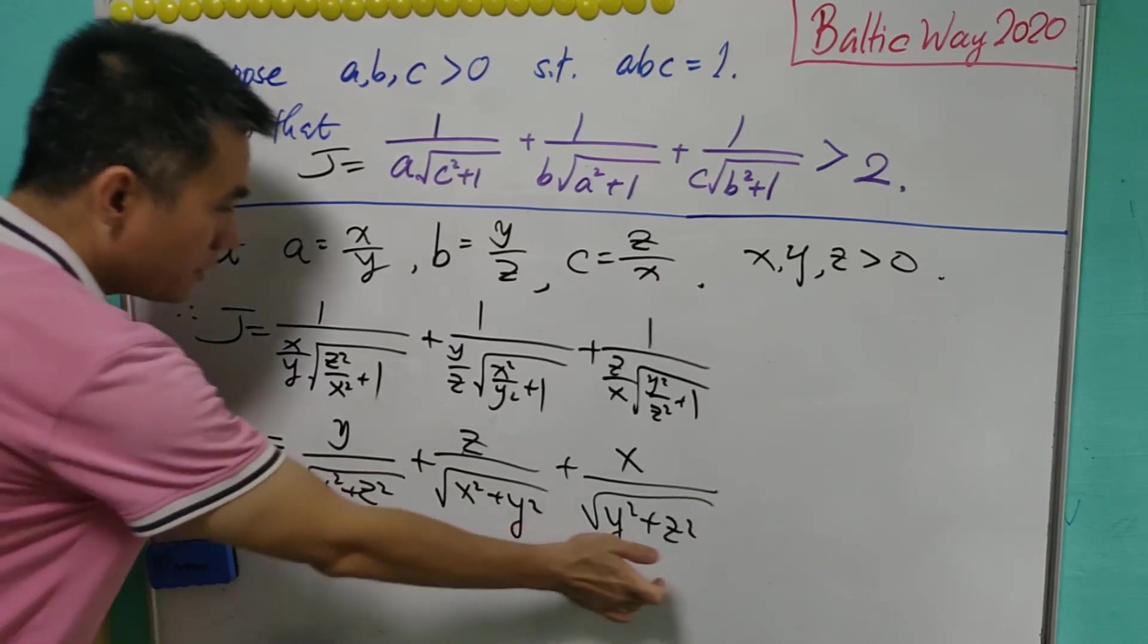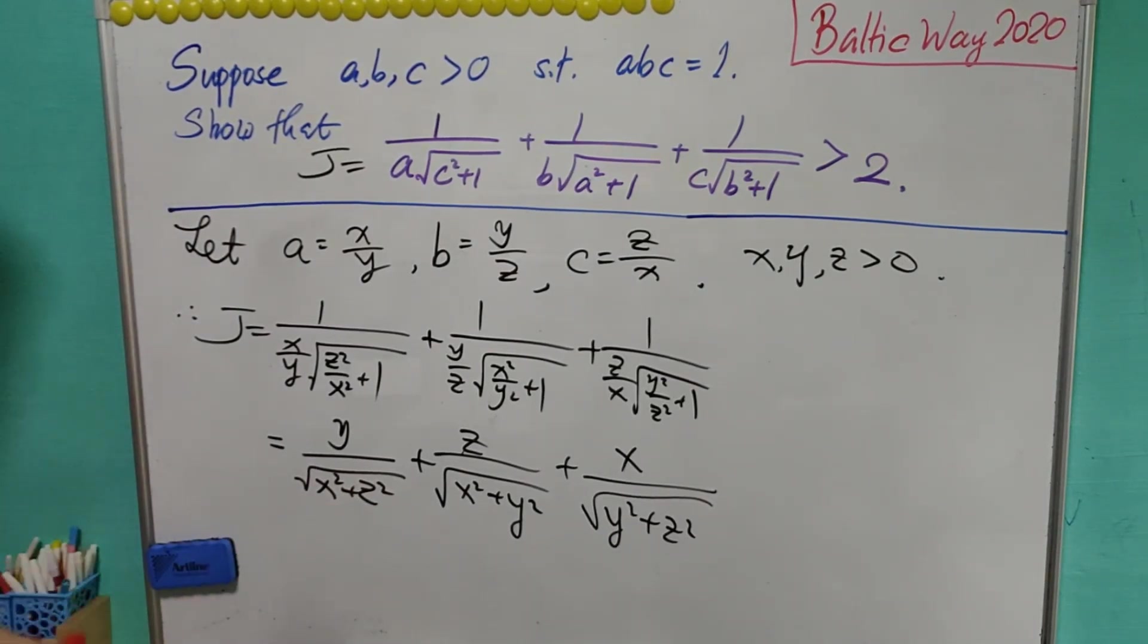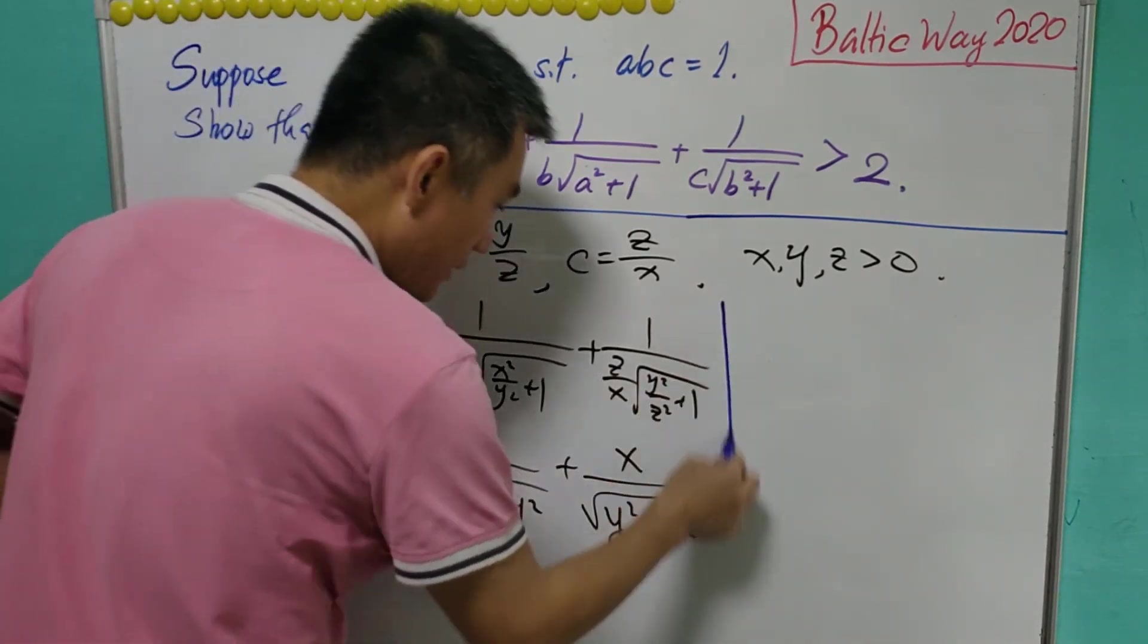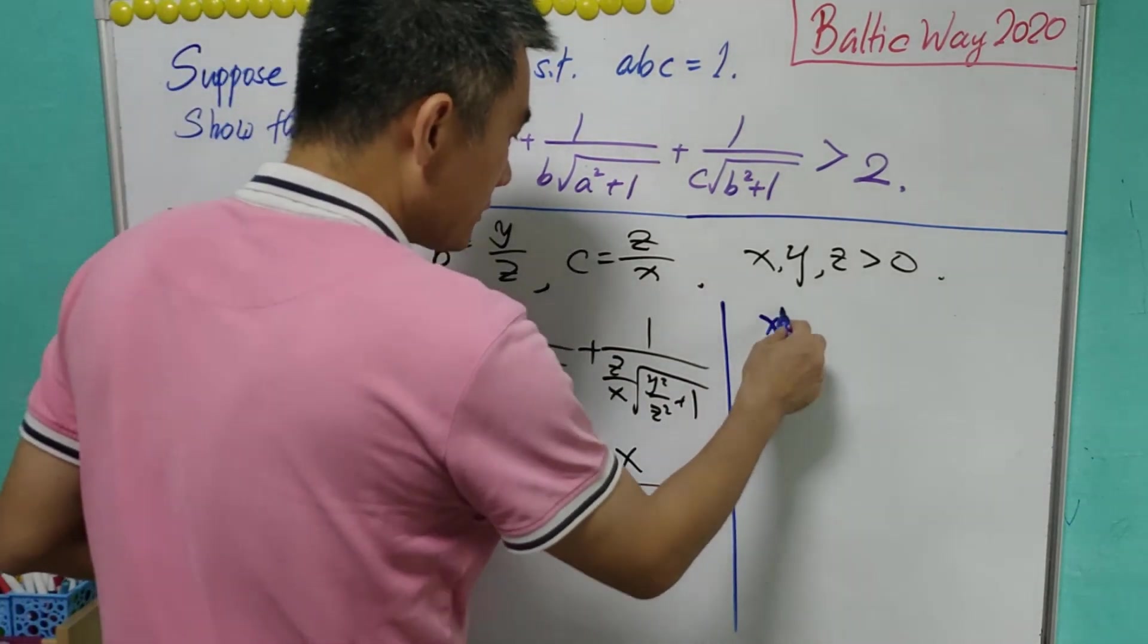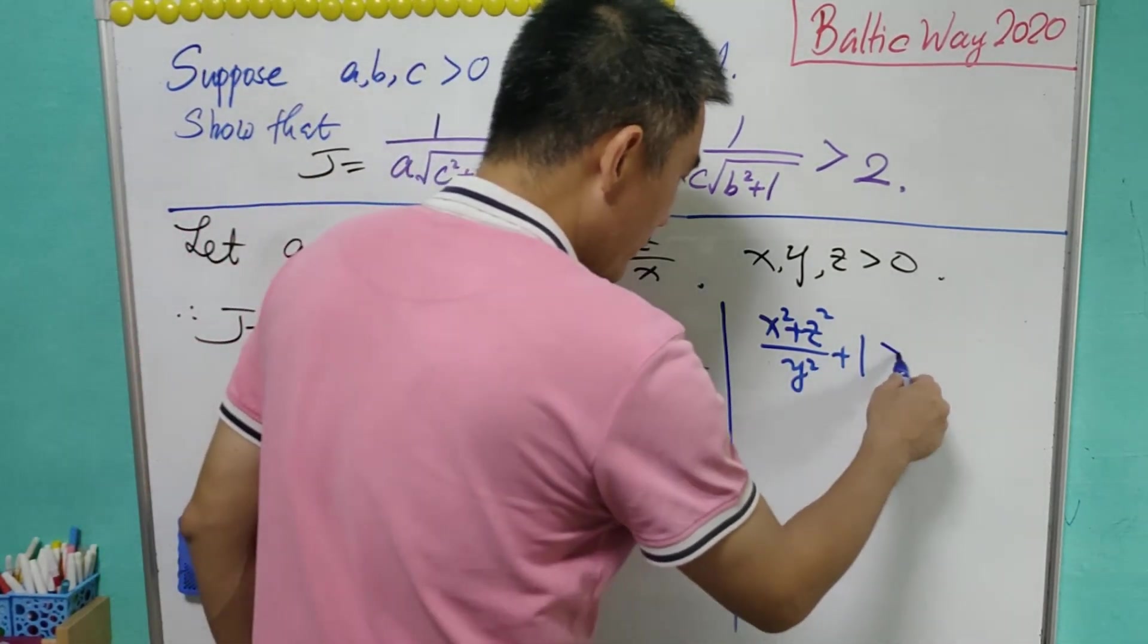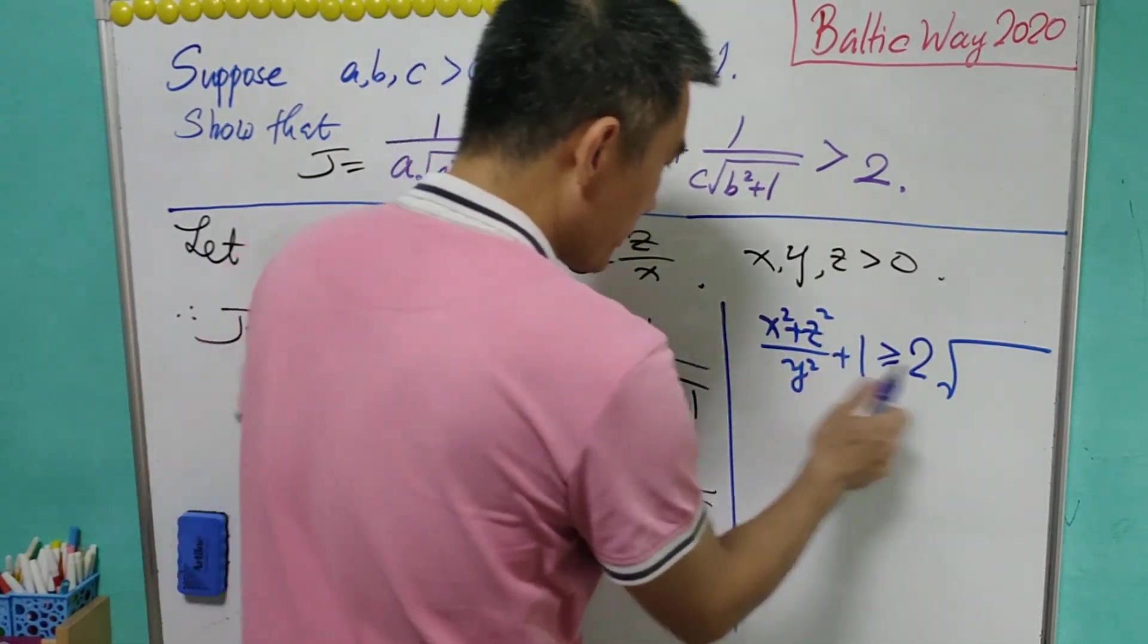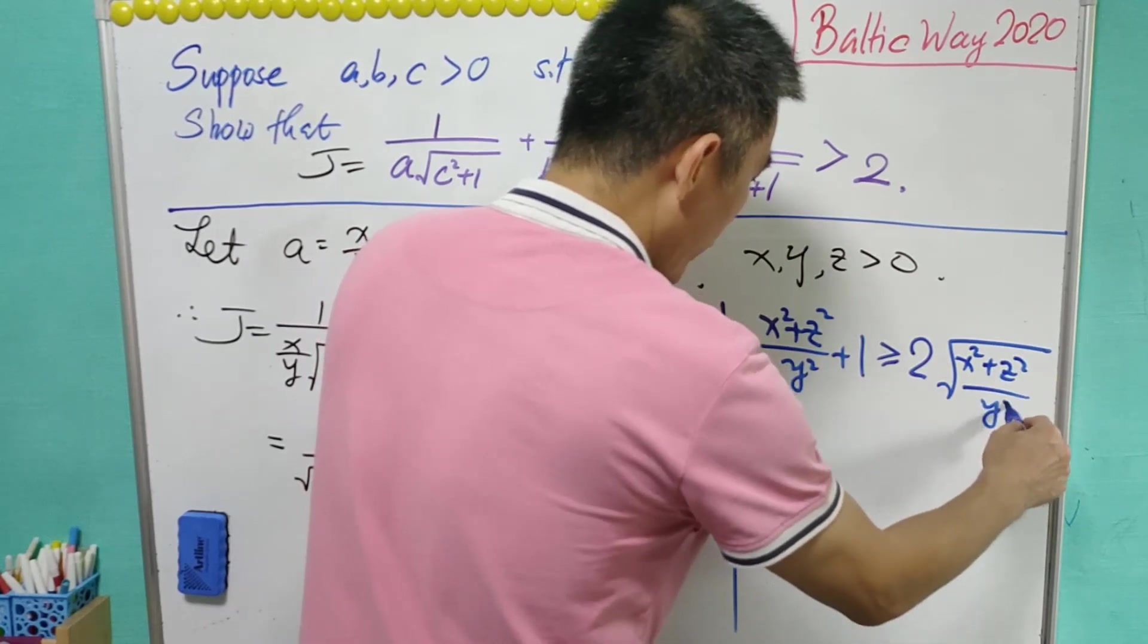It is not directly on the three terms, but it is on each of the terms here. So we may consider (x squared plus z squared) over y squared plus 1. Using AM-GM inequality, this is greater than or equal to 2 times the square root of the product. The product equals (x squared plus z squared) over y squared times 1.